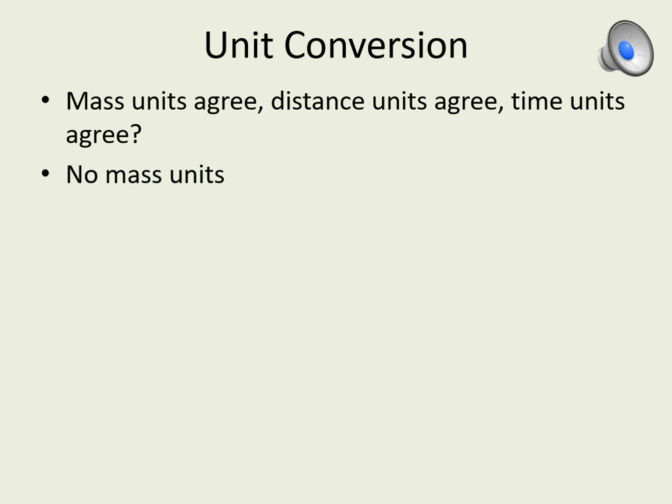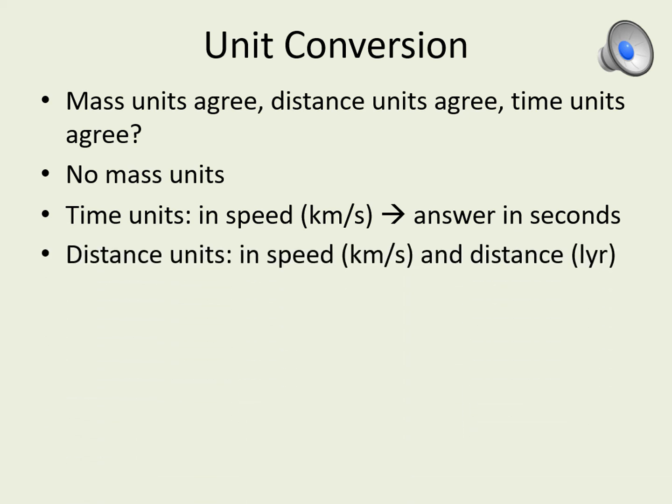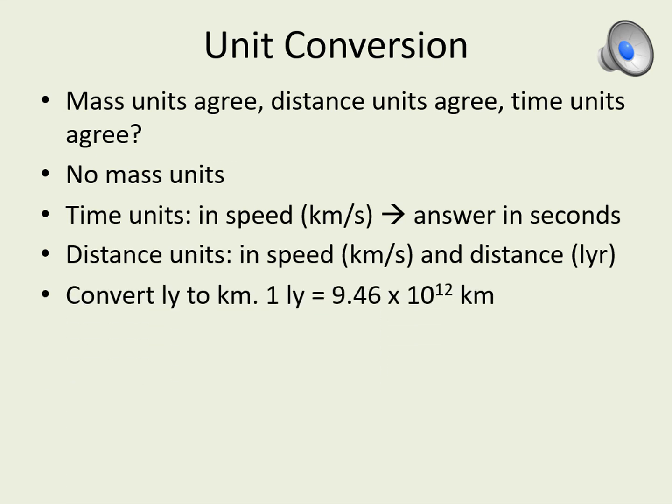In this problem we don't have any mass units so we don't have to worry about that, but we do have time and distance units. The time comes up in the speed of the spacecraft, which tells us the answer will have the same time units as the speed. Since the speed is given in kilometers per second, the answer will be in seconds. Distance units appear in two places: in the distance itself and in the speed. Here is where we need to do a unit conversion because the distance units don't match — the speed has kilometers in it while the distance is given in light years. Let's turn those light years into kilometers. To do that we need a conversion factor, and that's why you wrote down the number of kilometers in a light year earlier. Remember that every conversion factor is a fraction with the units you're trying to get to on top and the units you're getting away from on the bottom.